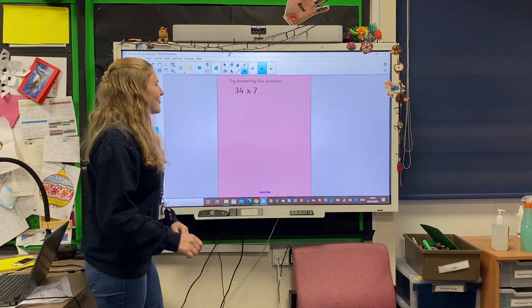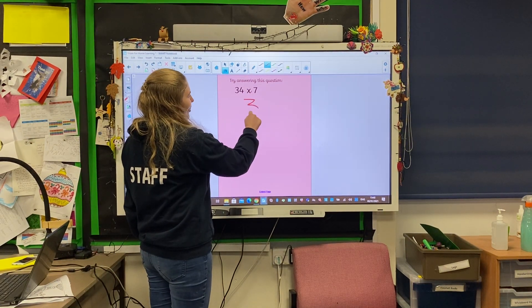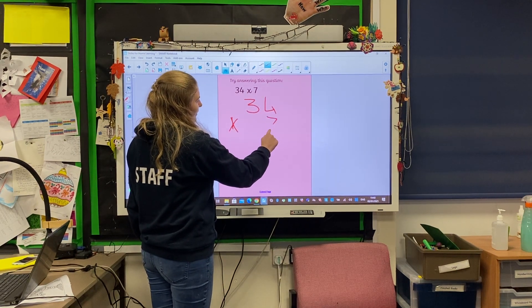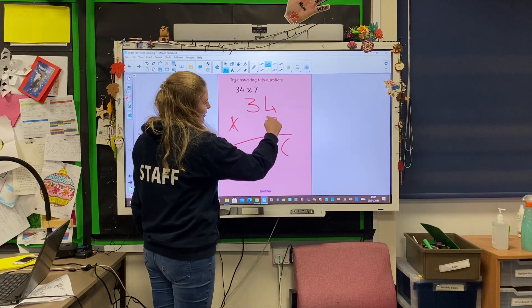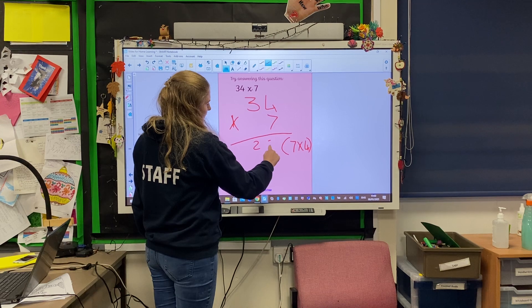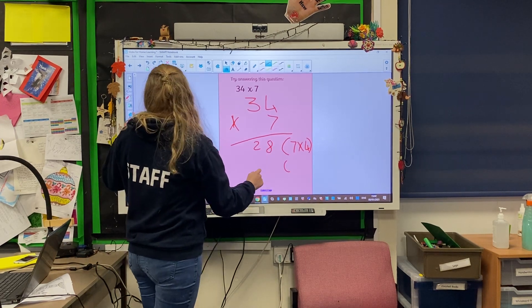Lovely, okay let's have a go at going through this together then. So we've got 34 times 7, we're going to do 7 times 4 which is 28, and we're going to do, oh scroll down for me board,